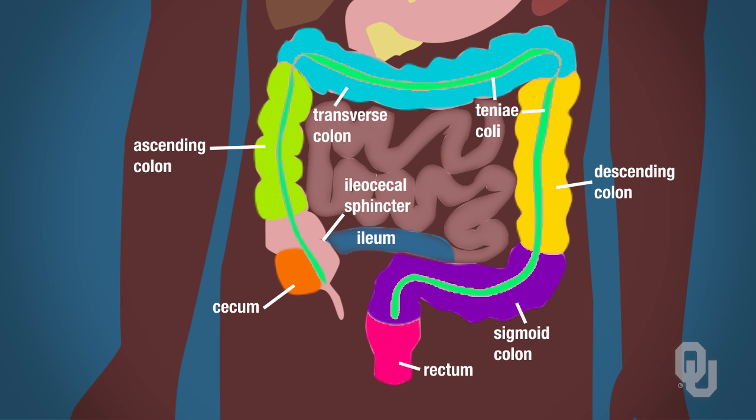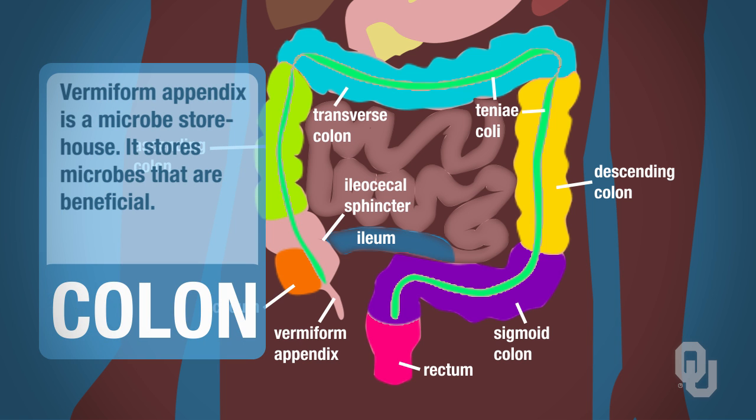We also have a structure called the appendix — the vermiform appendix, because it's worm-like. Recently they discovered that it might be important in replenishing beneficial gut bacteria. In other words, it's a microbe storehouse that stores microbes that are beneficial.